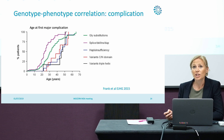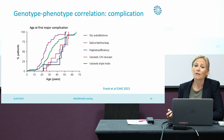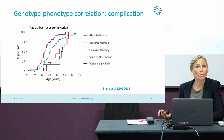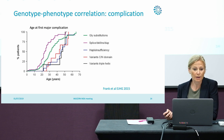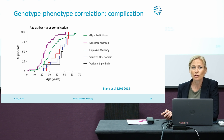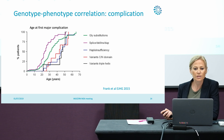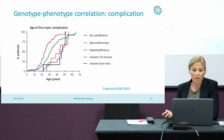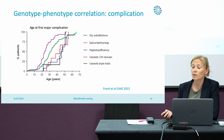There is a clear genotype-phenotype correlation with these different types of variants, meaning that based on the genotype we can group patients into a worse or milder phenotype. If we look at the age of first major complication, patients with glycine substitutions — the green line — and splice variants — the purple line — have a younger age at first major complication compared to other variants.